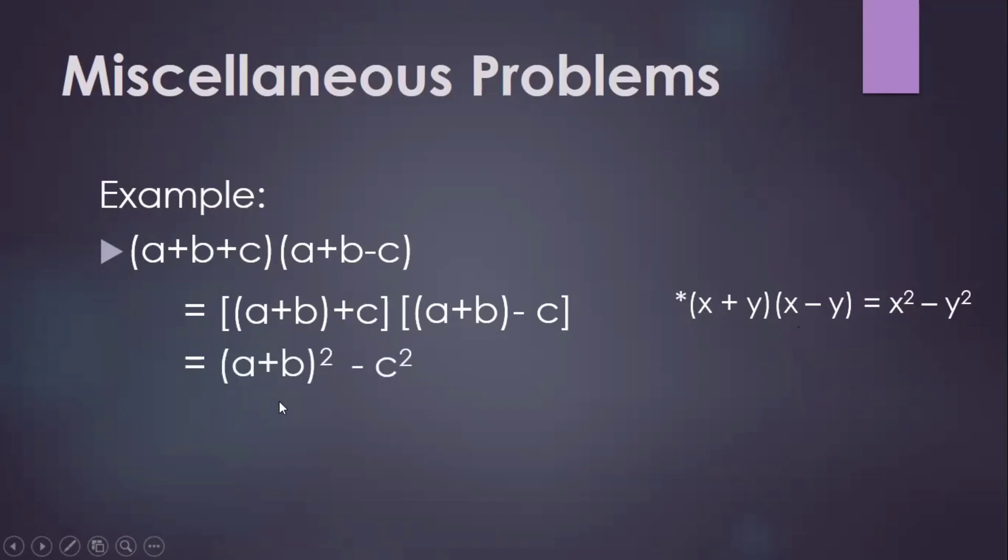And then after that, we're going to expand the square of this binomial. So that will be a squared plus 2ab plus b squared, and then don't forget the minus c squared. That is for the final answer.